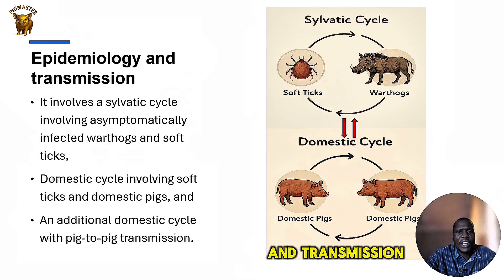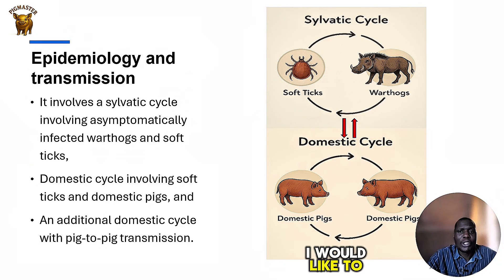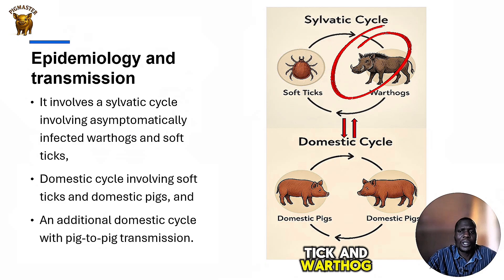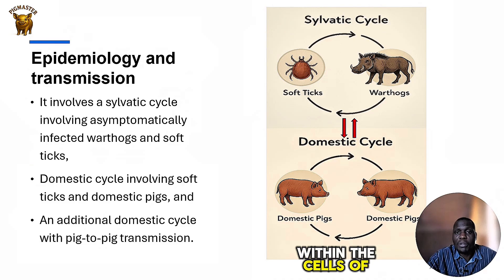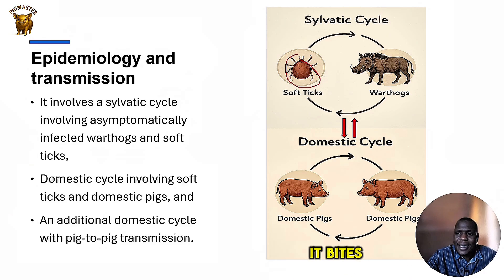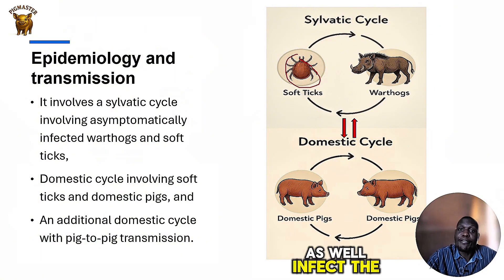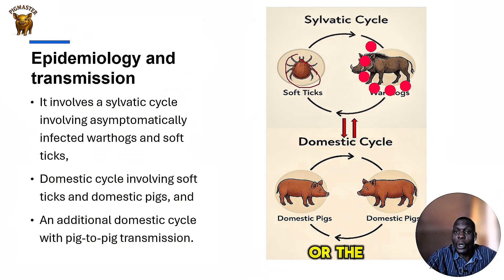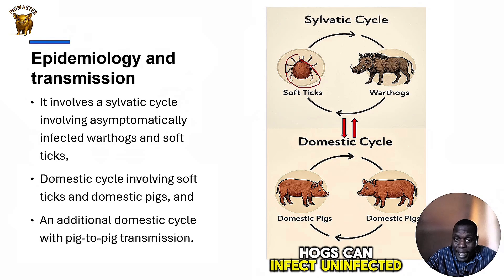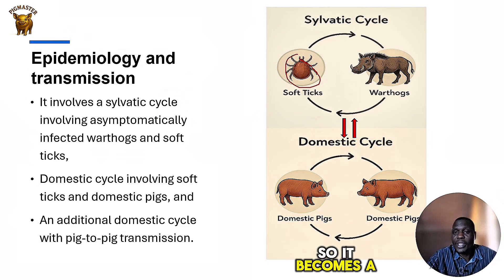What is the epidemiology and transmission of the disease? There are two cycles. The first is the sylvatic cycle, which involves the soft tick and the warthog. Warthogs live out in the wild, in game parks. The soft tick becomes the host for the virus — within the cells of the soft tick, the virus can reproduce and grow. When the tick bites the warthog, the warthog becomes infected. Surprisingly, the warthog can also infect the soft tick, so it becomes a cycle.